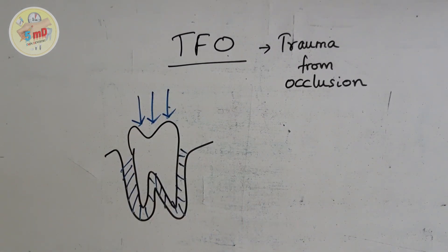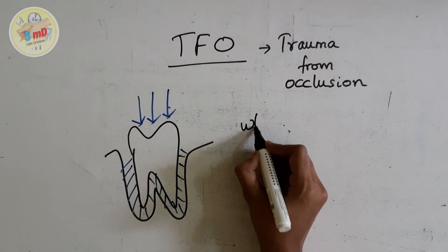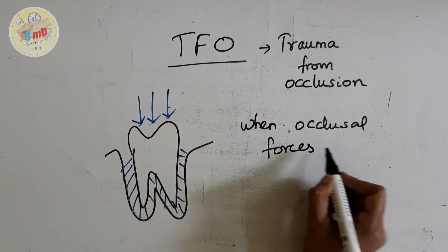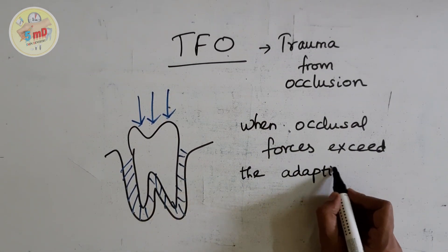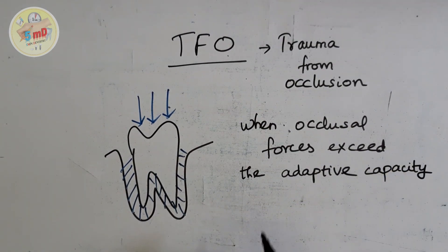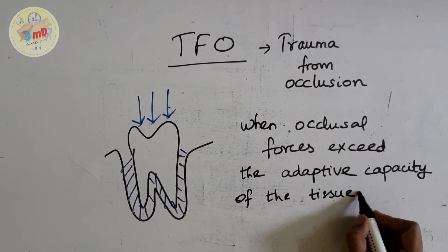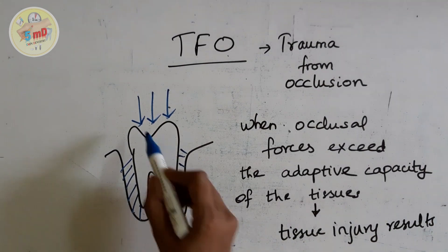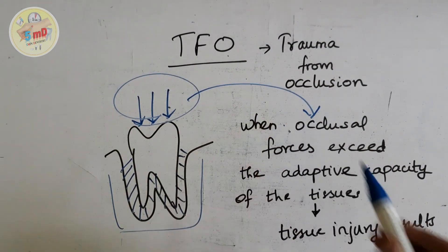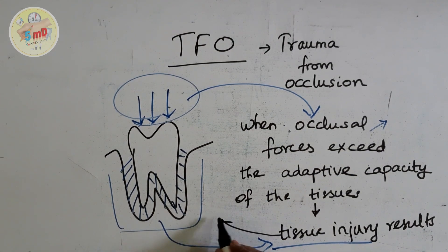Its main function is to accommodate the tooth to the occlusal forces, but when occlusal forces exceed the adaptive capacity of the periodontal tissue, trauma from occlusion results. This tissue injury is known as trauma from occlusion, whereas the occlusal forces are known as traumatic occlusion.